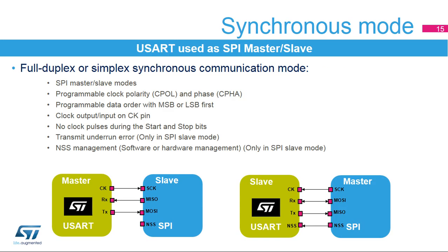The USART can also communicate synchronously. It can operate as an SPI in master or slave mode with programmable clock polarity and phase and programmable data order with MSB or LSB first. The clock is output in master mode or input in slave mode on the CK pin. No clock pulses are provided during the start and stop bits. When the USART is configured in SPI slave mode, it supports the transmit underrun error and the NSS hardware or software management.